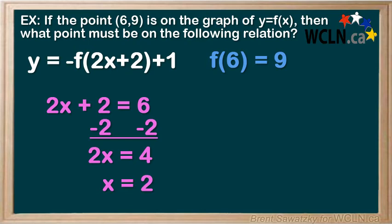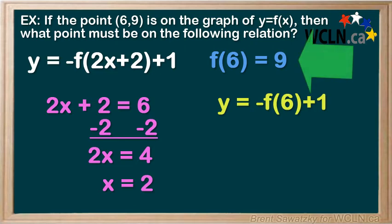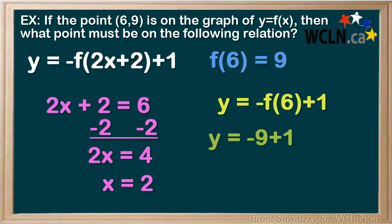So at this point we have our x, and now we have to determine our y. So with x equals 2, we can replace the f in terms of 2x plus 2 with f in terms of 6. And we go back to our known information, we see that we can replace that f in terms of 6 with 9. So when x is 2, y equals negative 9 plus 1 is negative 8.